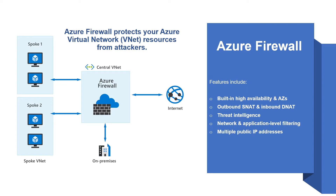Another feature is multiple public IP addresses. Up to 250 public IP addresses can be associated with your firewall. Another great feature is integration with Azure Monitor, which enables you to collect, analyze, and act on telemetry from Azure Firewall logs.